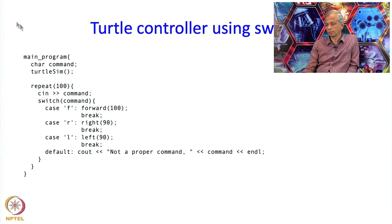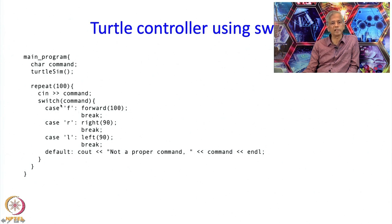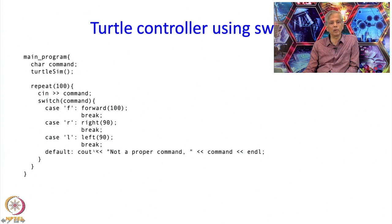We wanted an integer to come out of this switch, and the command being a character, its value is in fact an integer. If the value of this integer is equal to 'f', then forward 100 will be executed. After forward 100 is executed, because there is a break, control will go on to the next statement following this — the next repeat. If command was R, then this will be executed, and if none of these were present, then the default will be executed.